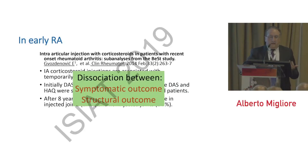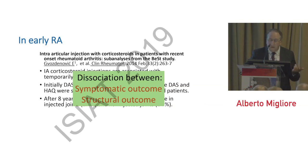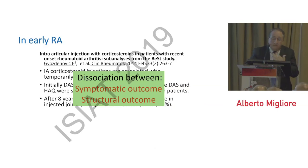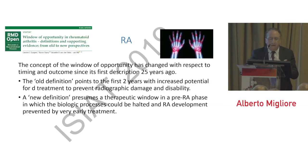Turning to inflammatory arthritis, intra-articular injection with steroids in patients with recent onset rheumatoid arthritis — a sub-analysis from the BEST study — showed a dissociation between symptomatic and structural outcomes. There was good symptom relief in about 50% of cases, but radiographs after 8 years showed similar damage in injected and non-injected joints. There is a very long period of observation between symptomatic and structural outcomes.